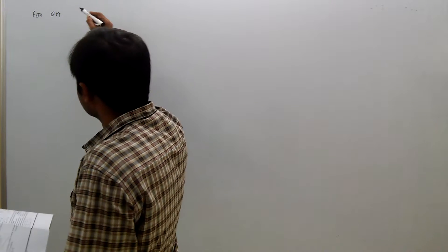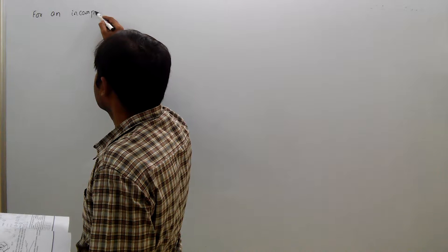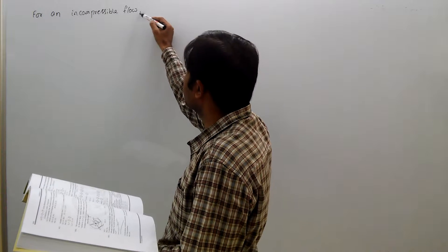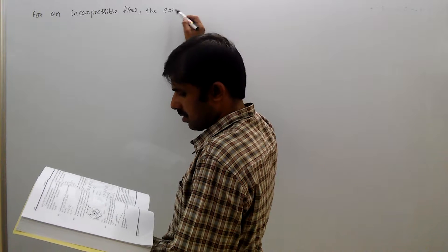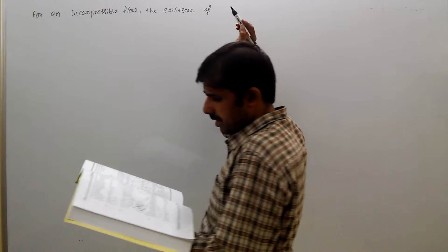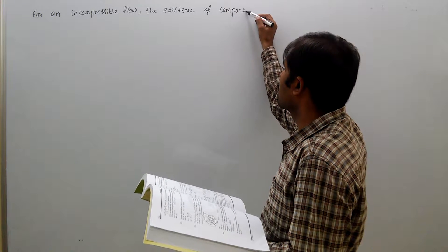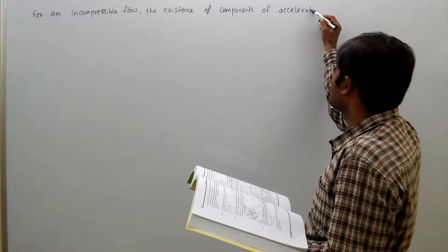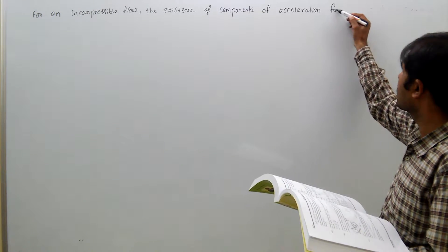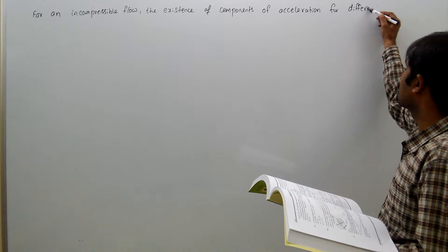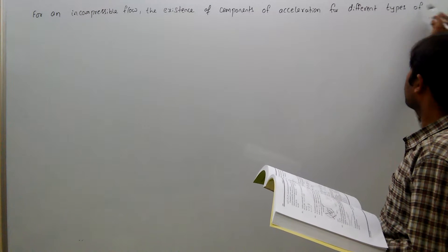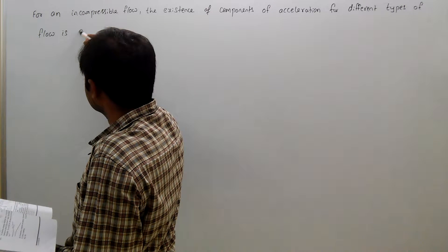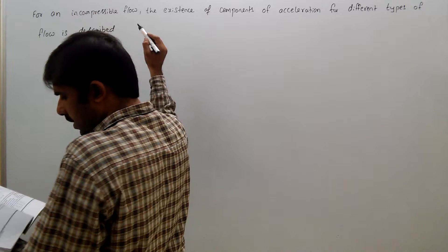For an incompressible flow, the existence of components of acceleration for different types of flow is described in the table below.